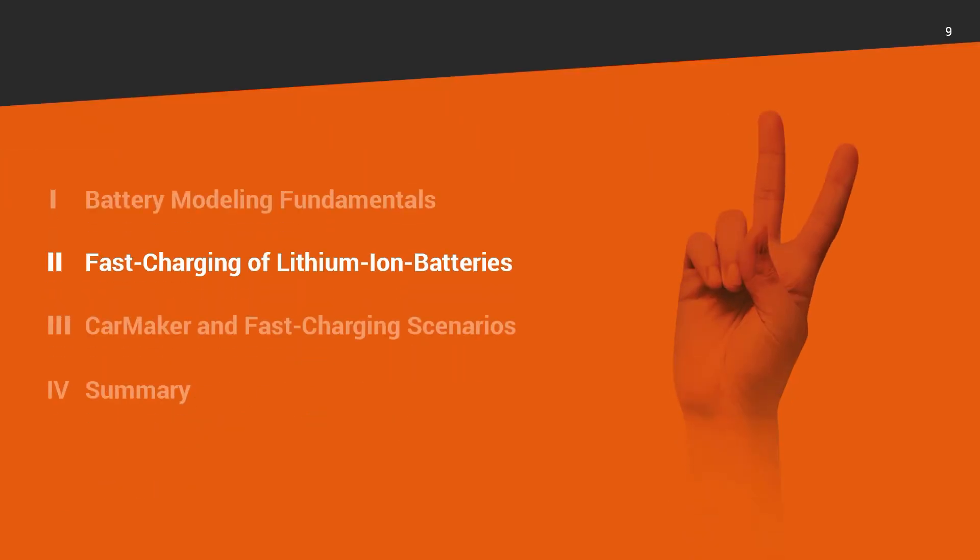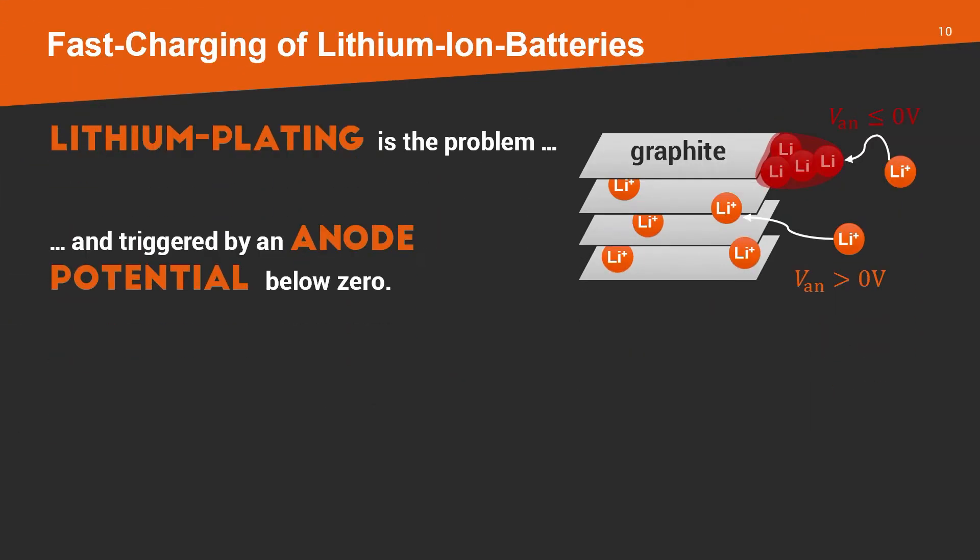That's it for the modeling side. So now, how can we use those models in a fast charging strategy? And in order to understand that, I have first of all to give you some details on what the problem in fast charging really is. If you charge really fast, a problem called lithium plating occurs. So what is that?